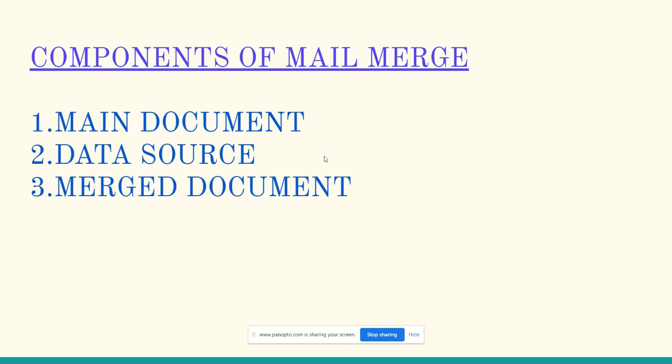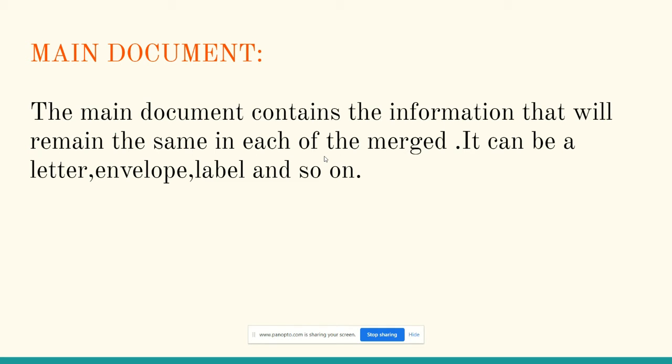The main document is used to store all the information. It contains the information that will remain the same in each of the merged documents. If you change anything, it remains the same in each merged document. It can be a letter, envelope, label and so on. The main document is very important to merge the mail.